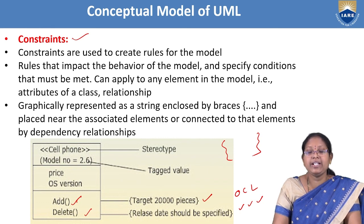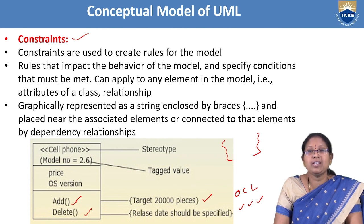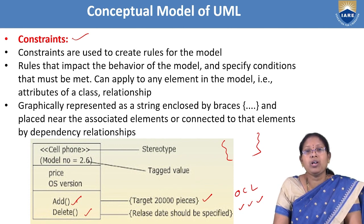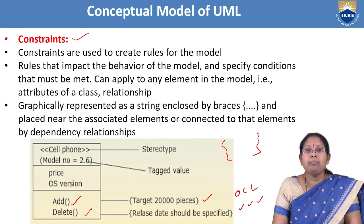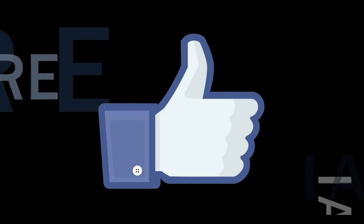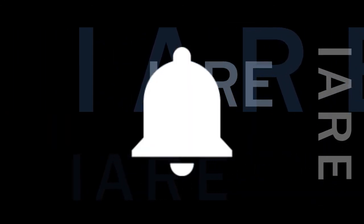The conceptual model of UML consists of basic building blocks (things, relationships, and diagrams), rules, and common mechanisms. By using things, following rules, and applying common mechanisms, we can build good models — that is the major concept of the conceptual model of UML. Thank you. Like, share, and subscribe. Hit the bell icon for more updates.